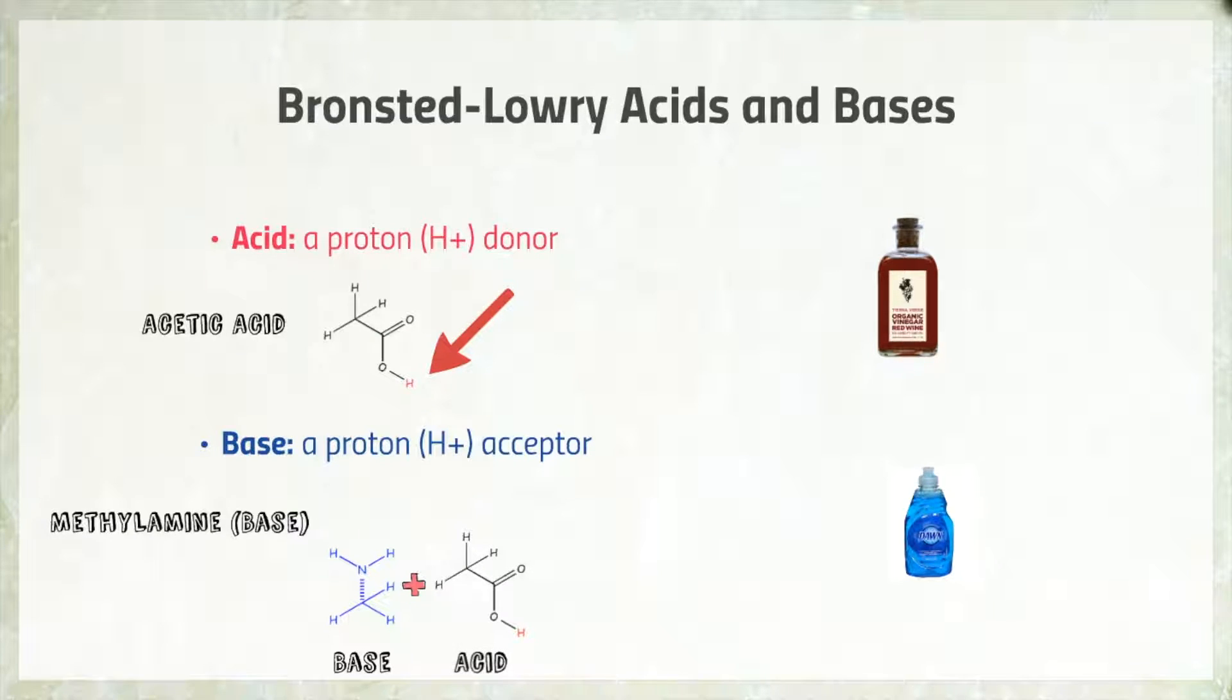A base has an atom that can accept a proton from an acid. So when it reacts with an acid, the acid will donate one of its protons to the base. Notice that because the base only accepts a proton or a hydrogen ion with no electrons, the nitrogen now has four bonds and a positive charge.